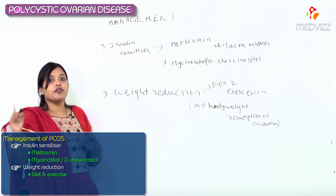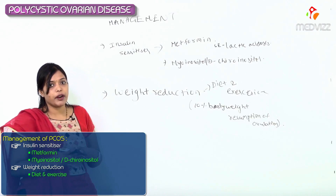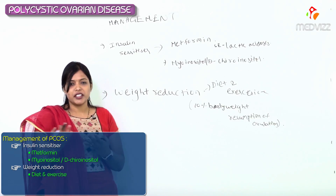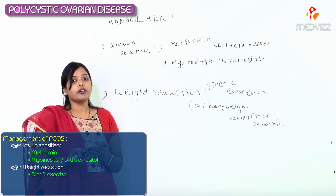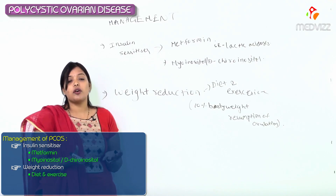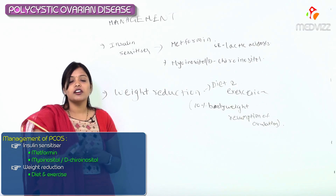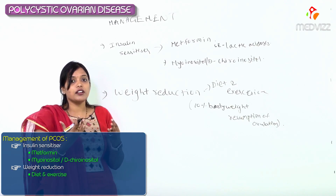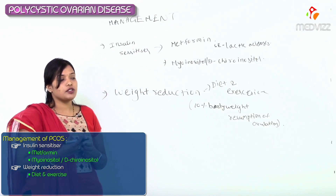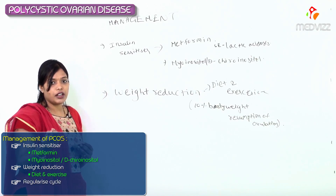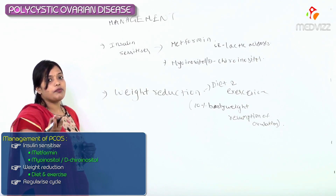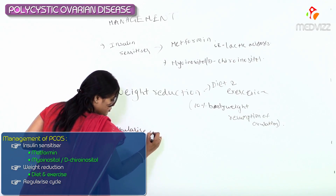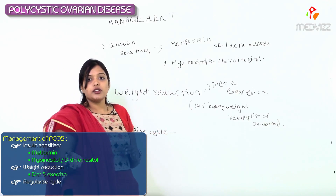Those are the basics — cutting off the two villains. The rest of the management depends on the patient's age. For adolescent girls, they are more bothered about beauty — they are not concerned about infertility yet. They are bothered about regular cycles, acne, and hirsutism. So adolescent girls come for treatment of hirsutism and regularization of cycles.